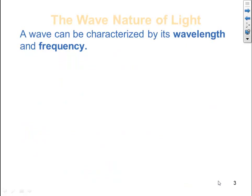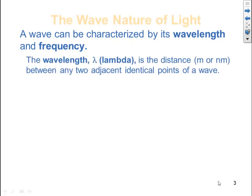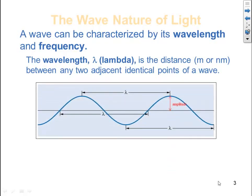A wave can be characterized by its wavelength and frequency. The wavelength, given the symbol lambda, is the distance in meters or nanometers typically between any two adjacent identical points of a wave. For instance, here we've taken it at the top of the wave, and if we take it on the next top of the wave, that is a measurement of a wavelength. Or we can take a point at the base of the wave to the identical point on the base of the next wave.